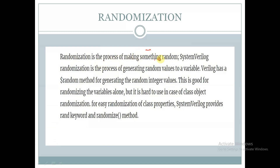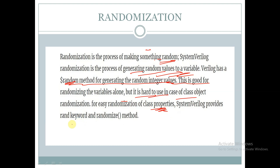Randomization is a process of making something random. SystemVerilog randomization is a process of generating random values to a variable. Verilog has a keyword $random for generating random integer values. This is good for randomizing variables alone, but it is hard to use in the case of class object randomization. For easy randomization of class properties, SystemVerilog provides the rand keyword and the randomize method.